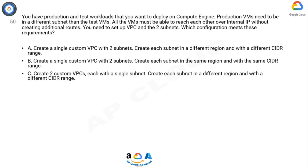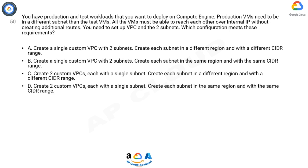Option C: Create a single custom VPC with two subnets. Create each subnet in the same region and with the same CIDR range. Option D: Create two custom VPCs, each with a single subnet. Create each subnet in the same region and with the same CIDR range.